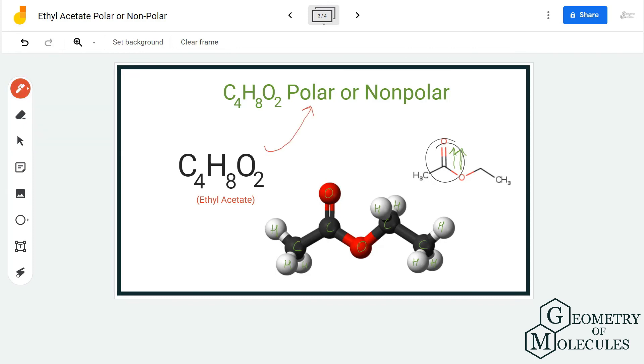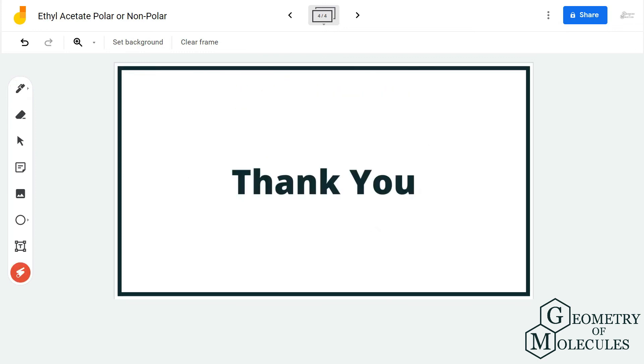at it, you will see that the regions around the oxygen atom have more partial negative charges, which leads to the polarity of this molecule. Hence, ethyl acetate is a polar molecule. For more such videos on Lewis structure, molecular geometry, and polarity of molecules, make sure to subscribe to our channel. Thank you for watching.